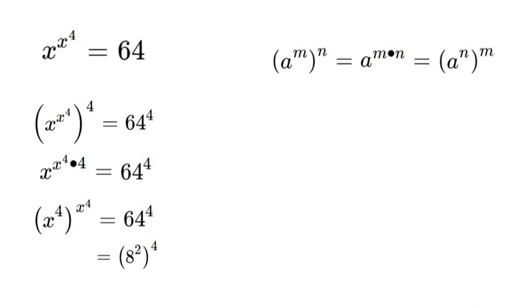Now according to our exponent properties, if you have an exponent exponent to an exponent that's multiplying them or switching them. So we'll have 8 to the power of 2 times 4 which will be 8 to the power of 8.